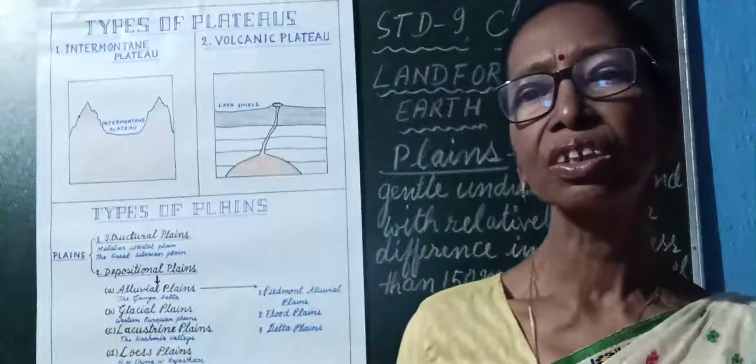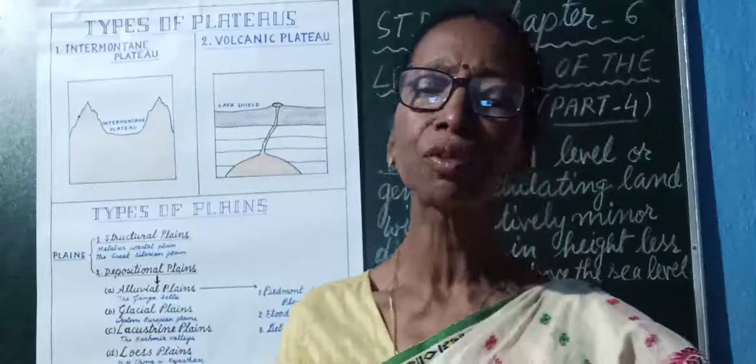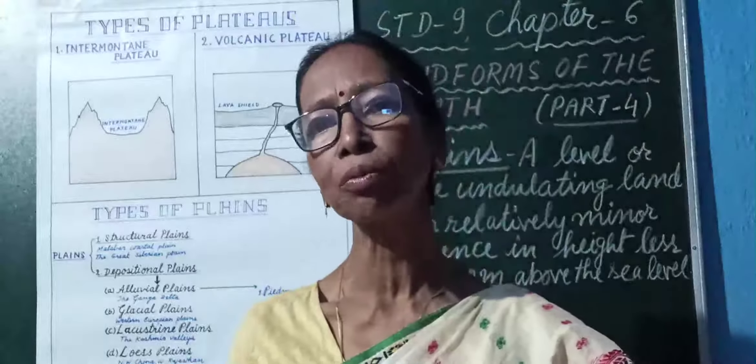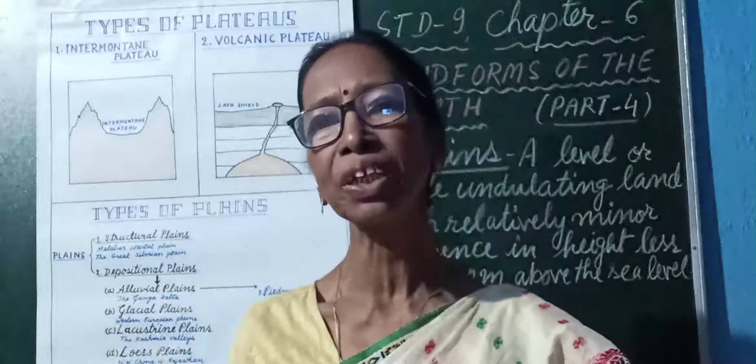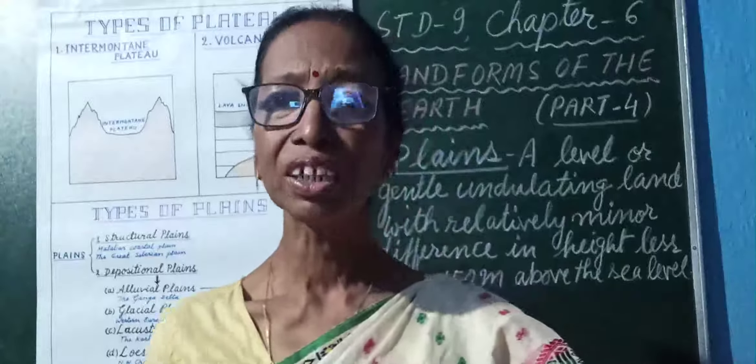What do you mean by plains? A level or gentle undulating land with relatively minor difference in height — less than 150 meters above sea level. They are undulating land, not very flat, but with gentle ups and downs.